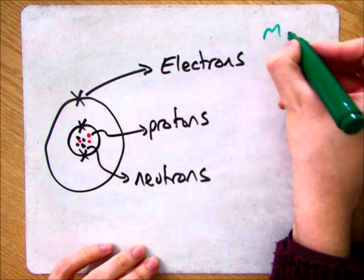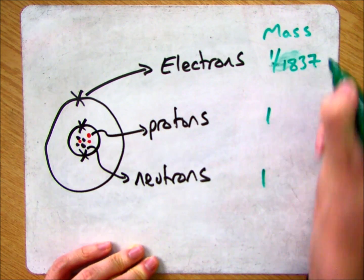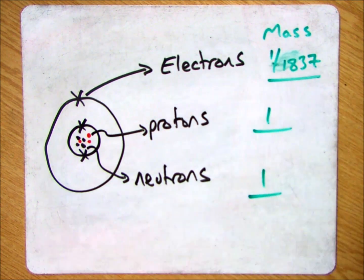And for the mass, we have a mass of an electron of 0, protons 1 and neutrons 1. Electrons though, it's actually 1 divided by 1837. Try and remember that.